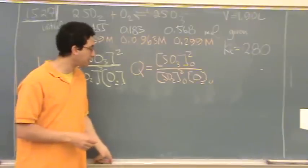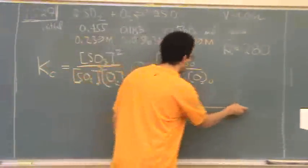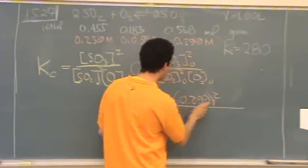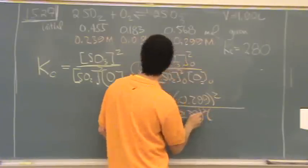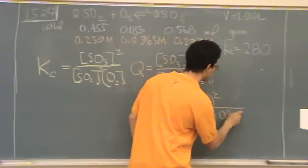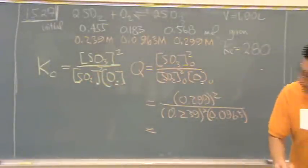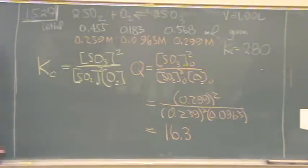So, I'm going to put in these numbers here into Q. I'm going to use this Q equation to test if I'm at equilibrium. At this point, it might seem a little more meaningless to use this Q, but it becomes helpful as we get to more complex problems. So, you plug in SO3 is 0.299 squared, SO2 is 0.239 squared, O2 is 0.0963. And that value turns out to be 16.3. So, are we at equilibrium? Part A, no. Not at equilibrium because Q and K are not equal. So, when Q equals K, we're at equilibrium.